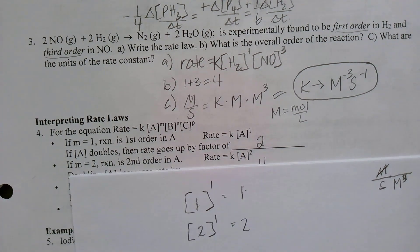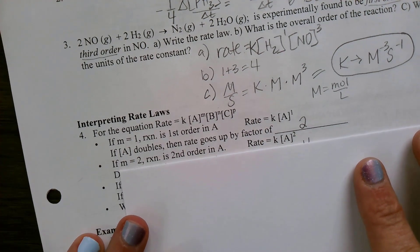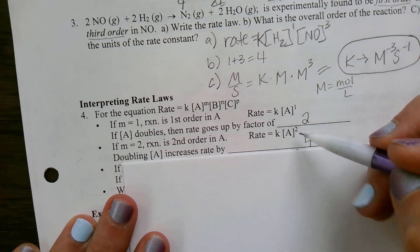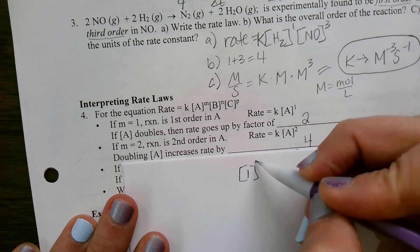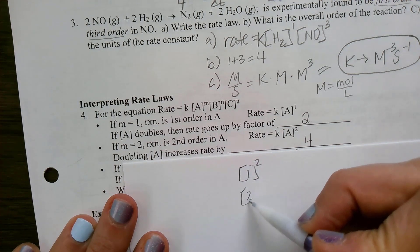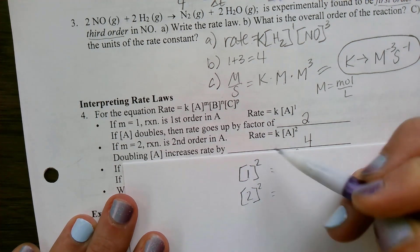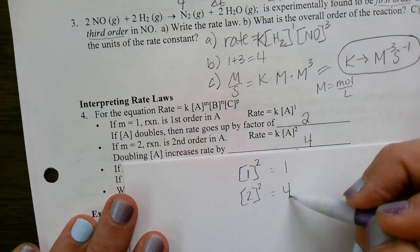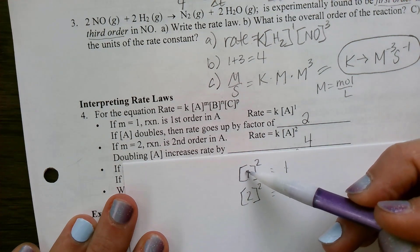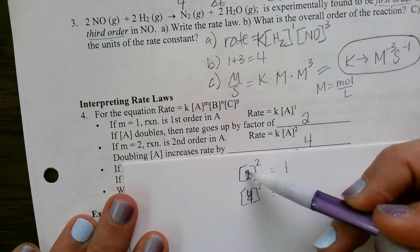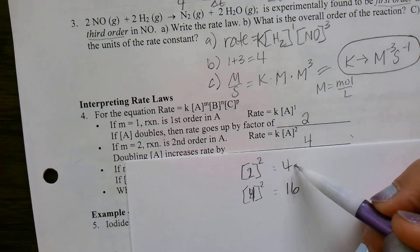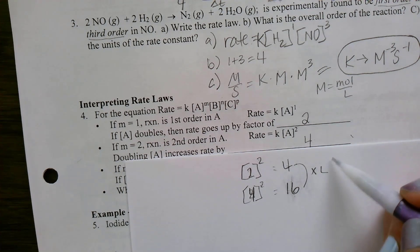What if it's to the 2nd order? Let's say I had a concentration of 1 and doubled it to 2. 1 squared is 1, 2 squared is 4, so the rate increased by a factor of 4. This works for any numbers: if you use 2 and 4, then 2 squared is 4 and 4 squared is 16, and going from 4 to 16 is an increase by a factor of 4.